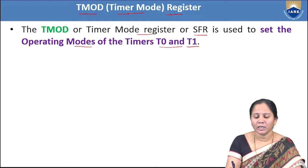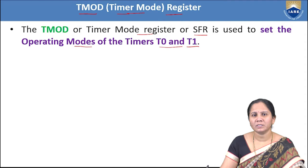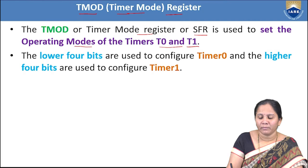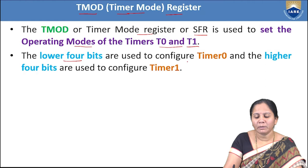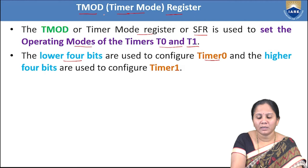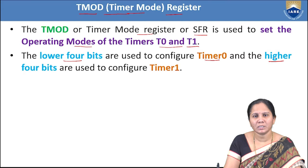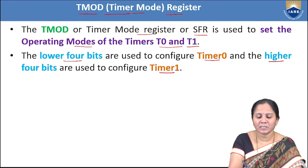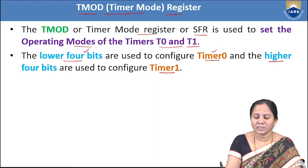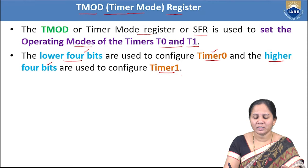Either Timer 0 or Timer 1 can be set to any of the four modes. Both timers are 16-bit. The lower order 4 bits of the TMOD register are related to Timer 0, and the higher order 4 bits are related to Timer 1. By changing the lower 4 bits, we configure Timer 0; by changing the upper 4 bits, we configure Timer 1.